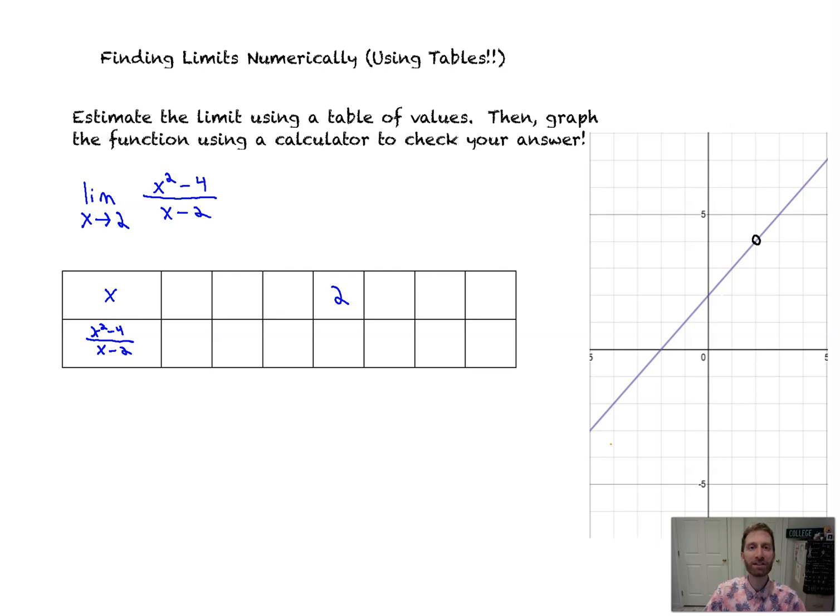Let's jump into a classic numerical limits problem. What this is basically asking us to do is to find the limit of a function, in this case the limit as x approaches 2 of x squared minus 4 all over x minus 2. We're going to do that by evaluating numbers really close to x equals 2. So we're going to approach x equals 2 numerically instead of looking at it graphically. It says, estimate the limit using a table of values, then graph the function using a calculator to check your answer.